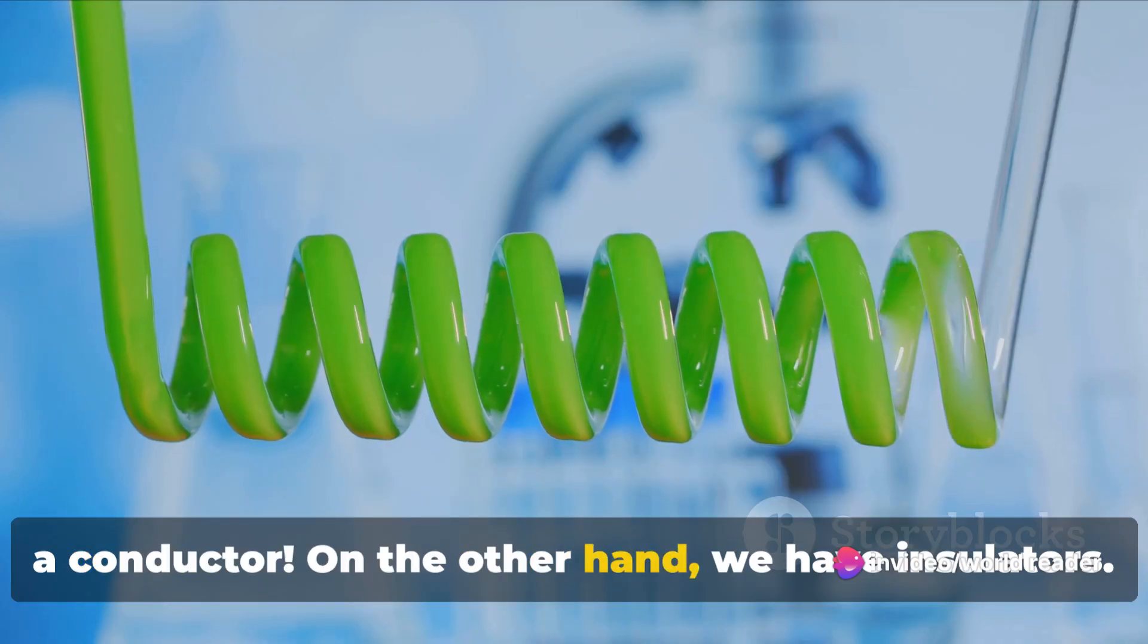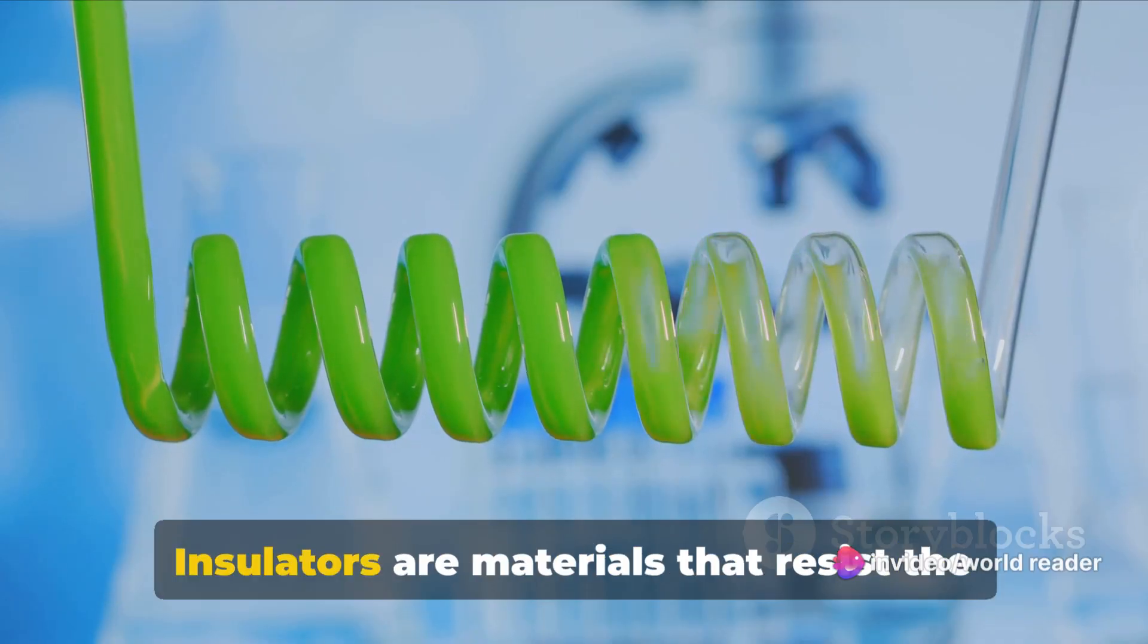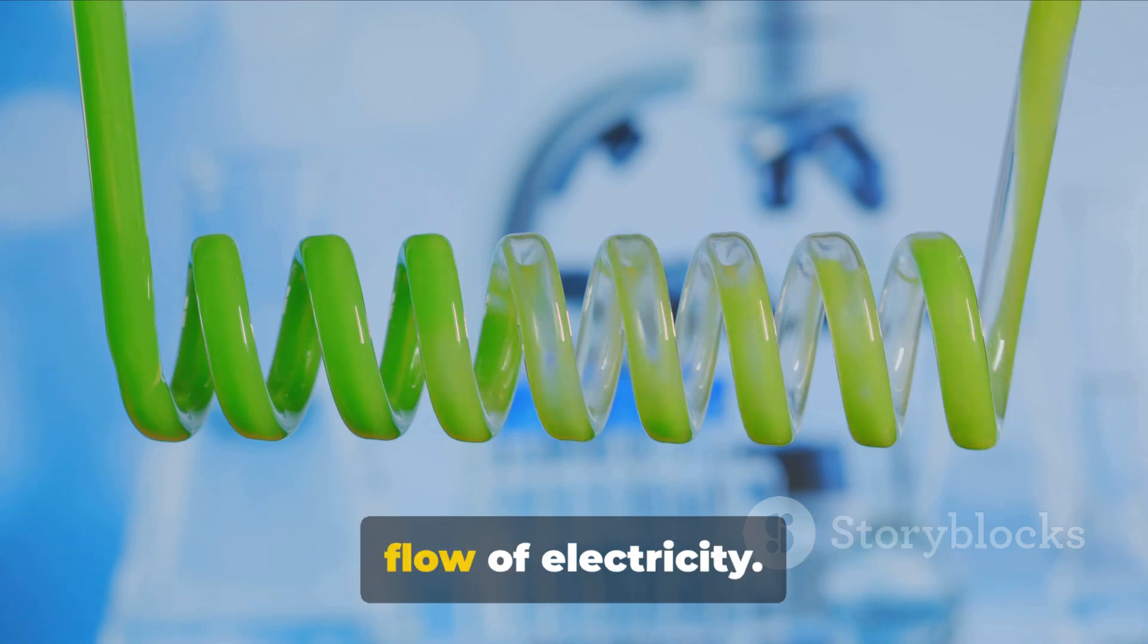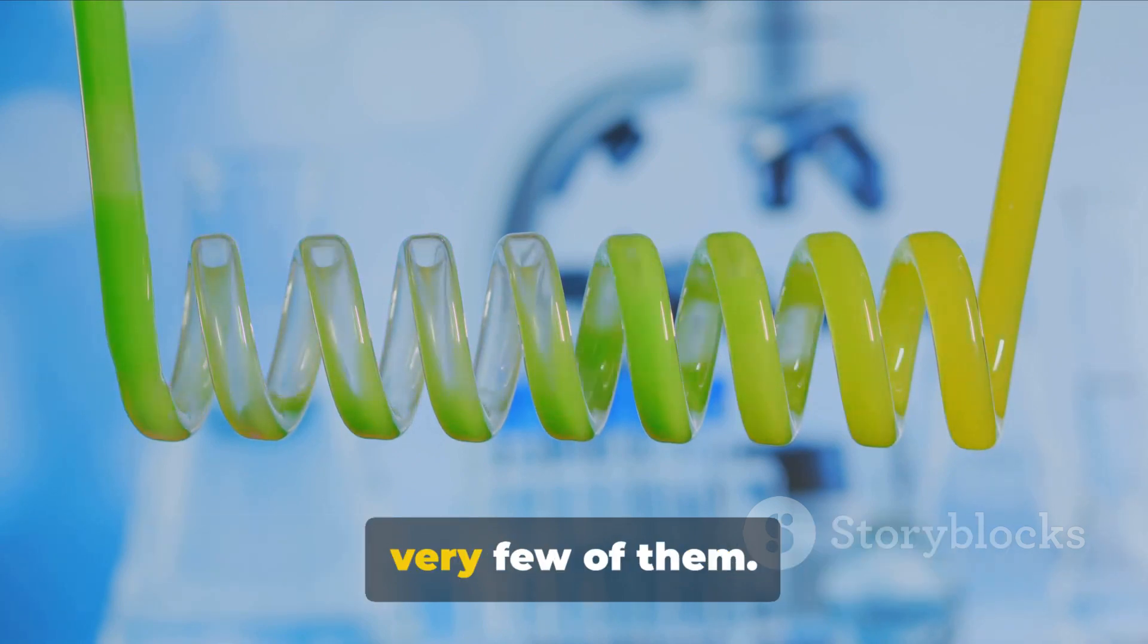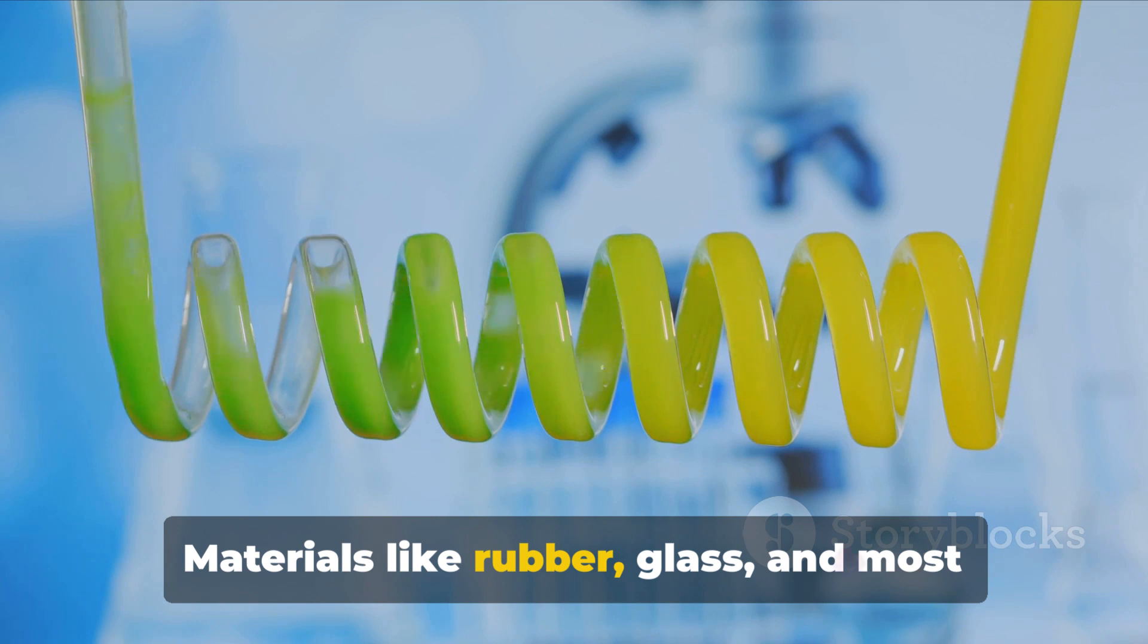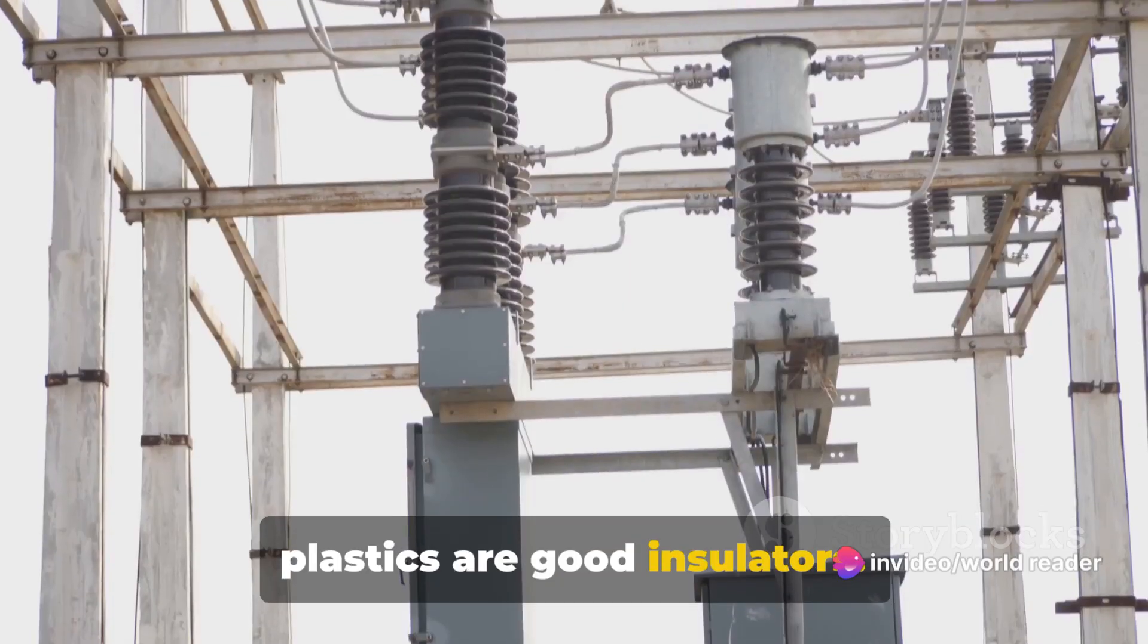On the other hand, we have insulators. Insulators are materials that resist the flow of electricity. They do not have free electrons or have very few of them. Materials like rubber, glass, and most plastics are good insulators.